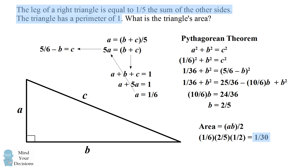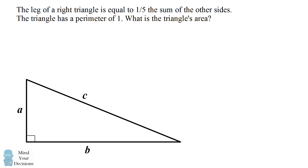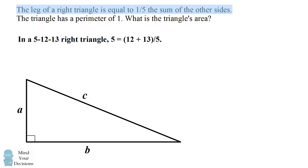But there is a shortcut if you think creatively. You're given the property that the leg of the right triangle equals one-fifth the sum of the other sides — a problem like this was used in competition math. If you go through familiar triangles, you might think about the 5-12-13 right triangle, in which 5 equals one-fifth the sum of 12 and 13.